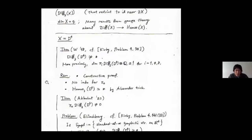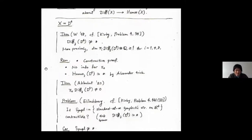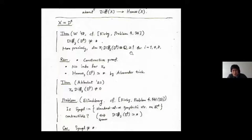Let me mention our result on diffeomorphisms of D4. We showed that Diff(D4) is not contractible. More precisely, we showed that the dimension of the rational homotopy group of Diff(D4) is at least 1 for some degrees — at least 1 for degree 8, and so on. This shows that the four-dimensional analog of the Smale conjecture is false.